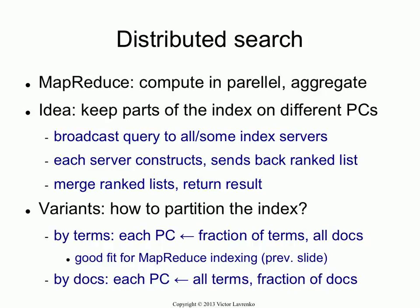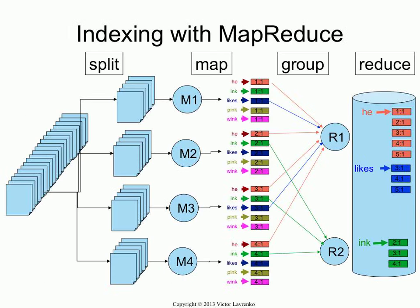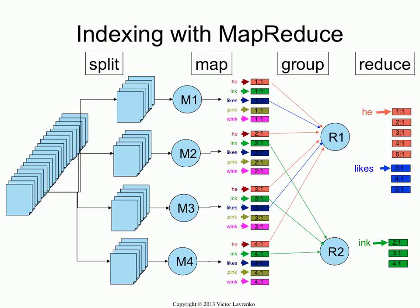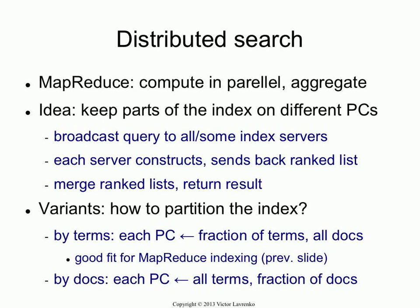The different options you have at this point is how do you partition the index. We went over the MapReduce construction for the indexing, and if you did MapReduce, what you would end up with is on each machine you would have a complete index for a fraction of terms. So machine R1 would have a complete index for 'he' and a complete index for 'likes', and machine R2 would have a complete index for 'ink'. That is splitting the index by term.